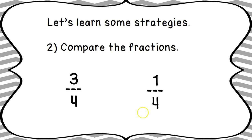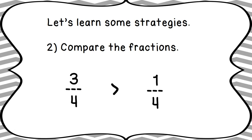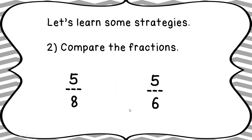Another strategy we can use is to compare the denominators. If the denominators are the same — in this case both are fourths — we look at the numerators. I've got three-fourths and one-fourth. Three is larger than one, so three-fourths is greater than one-fourth. This works whenever the denominators are the same: look for the largest numerator.